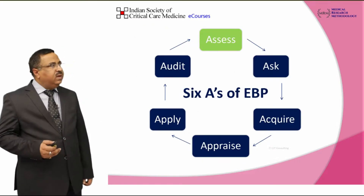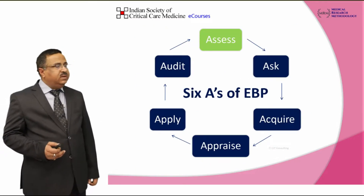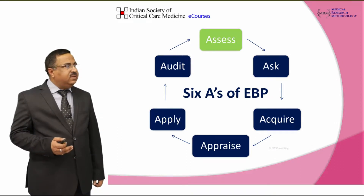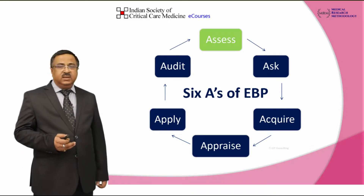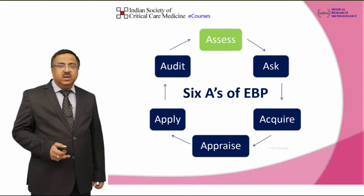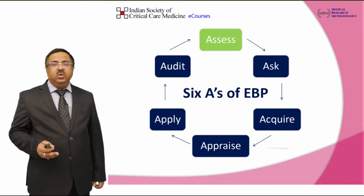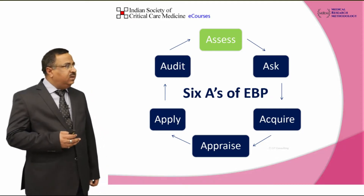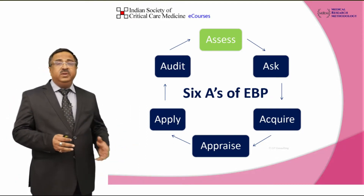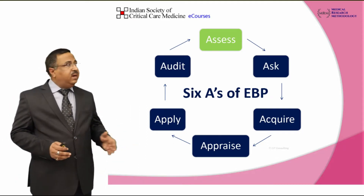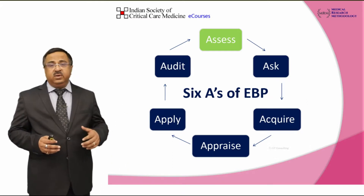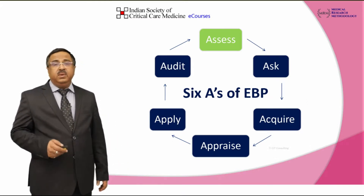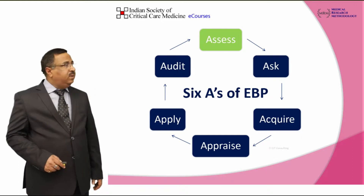In evidence-based practice, the cycle goes like this: first we assess, then ask, then acquire, and then appraise — and this is the point where we will insist upon appraisal, how it is done. After that, you apply it for your own patient or setup, and finally you audit it retrospectively to see whether things have gone the right way, or it may be done in a prospective manner as well.